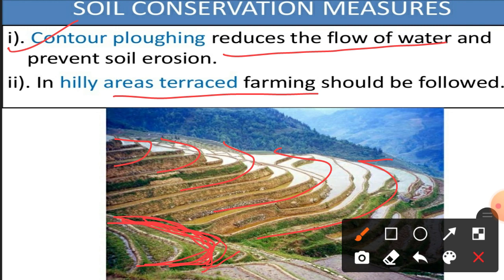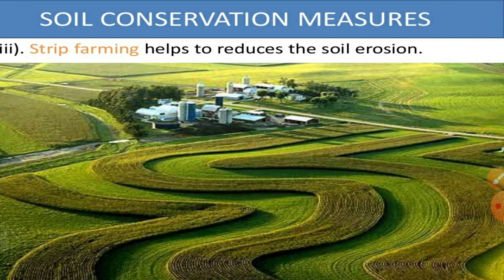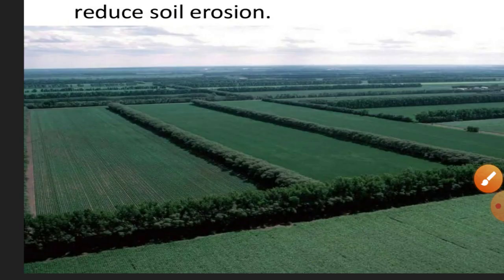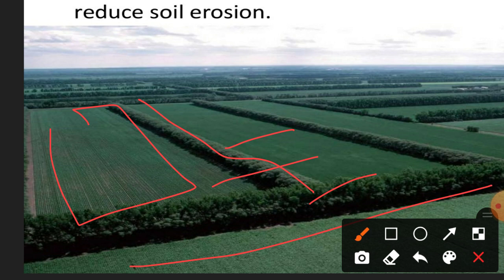On the terraces, which are like steps formed along contour lines, a bund (raised border) is maintained so that excess water fills on the terrace and does not flow downhill, which also prevents soil erosion. Next, strip farming helps reduce soil erosion — different strips are formed and farming is done on them to stop soil flow. Continuous cultivation across the entire area helps hold all the soil in place.